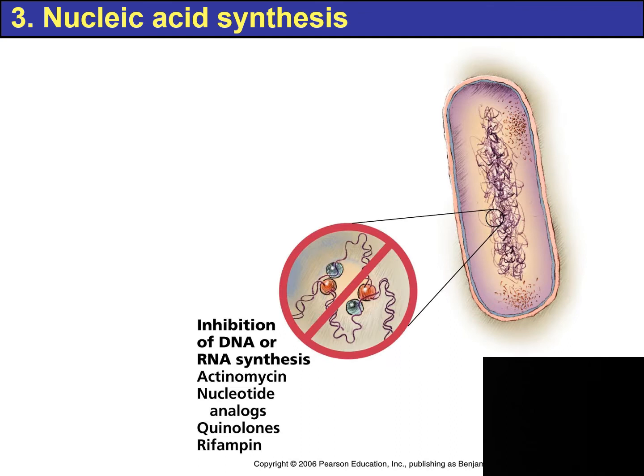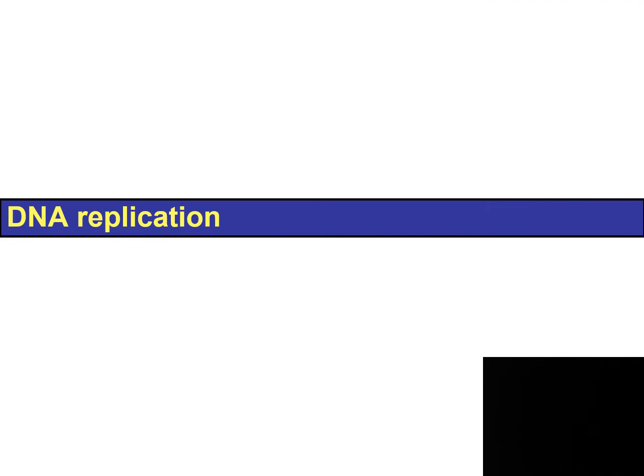Nucleic acid synthesis is needed for the organism to replicate. We're going to talk about several categories of drugs that would inhibit DNA synthesis or RNA synthesis. We'll first look at DNA replication.